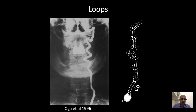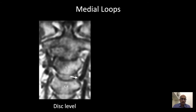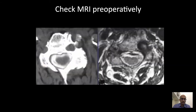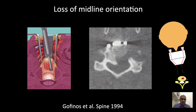Another anomaly in the V2 segment are loops. Medial loops can be dangerous. Depending on the level, medial loops can be at the disc level, where they can get injured during discectomy or foraminotomy, or they can be at the vertebral body level. At the body level, if they go unrecognized, one can easily damage the artery during a corpectomy. A careful examination of axial images at the body level, even on MRI, will reveal an eccentric transverse foramen. This should prompt a detailed anatomical evaluation of the vertebral artery if anterior surgery is planned.